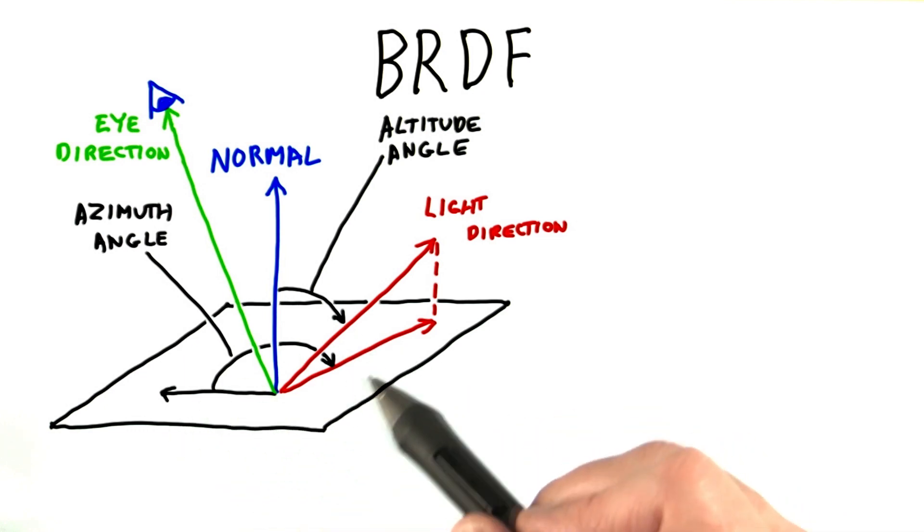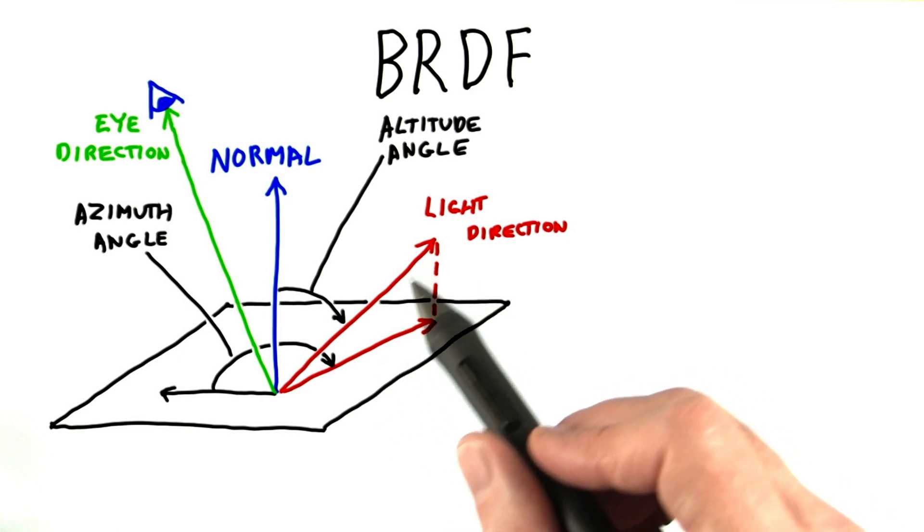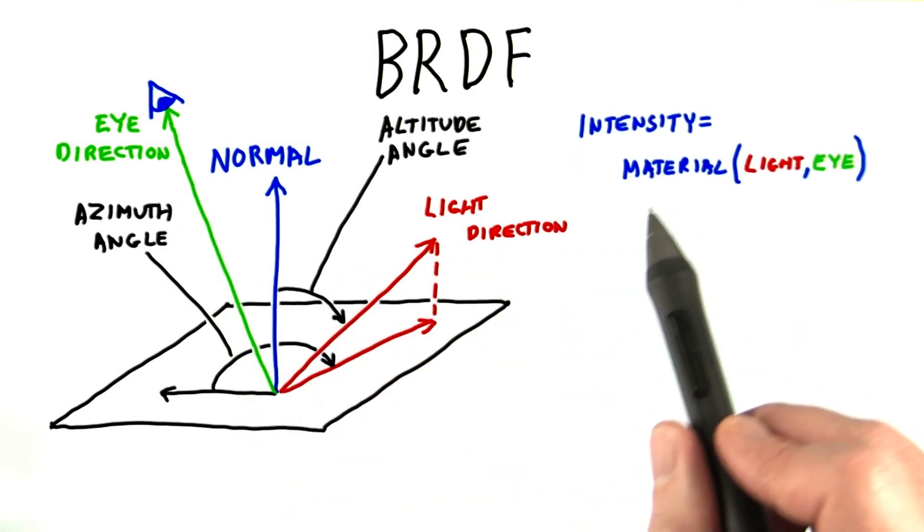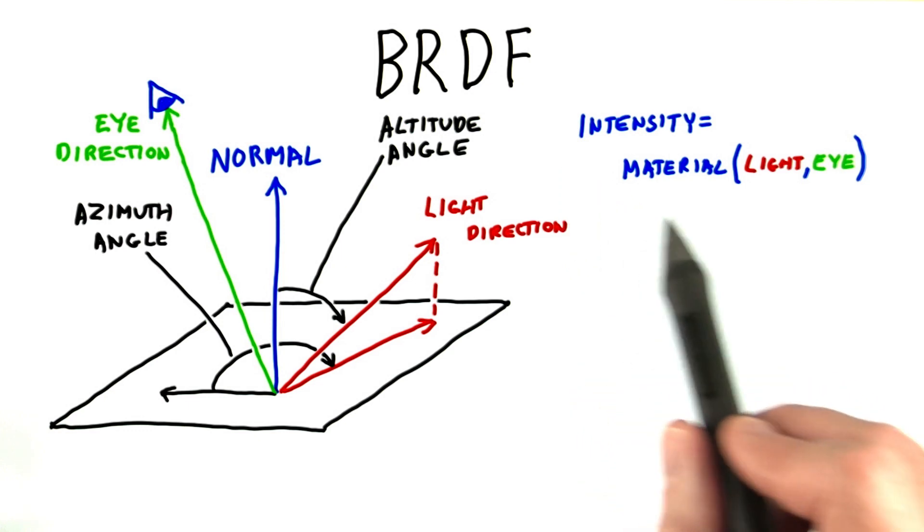Think about a surface and how it reflects light. The two variables we use are the light's incoming direction and the amount of light reflecting towards the eye. So at its simplest, a material can be represented by this function.